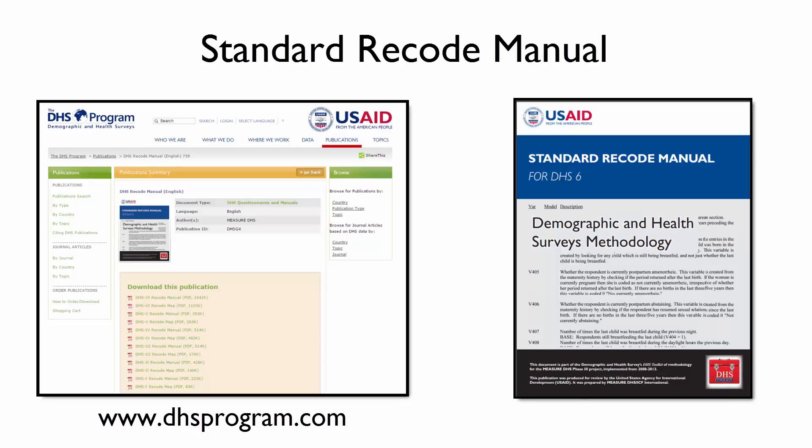If you would like to know more about what is included in each variable, we strongly encourage users to check out the Recode manual, which provides a description of each variable in the data file and gives additional information that is not available in the data dictionary.